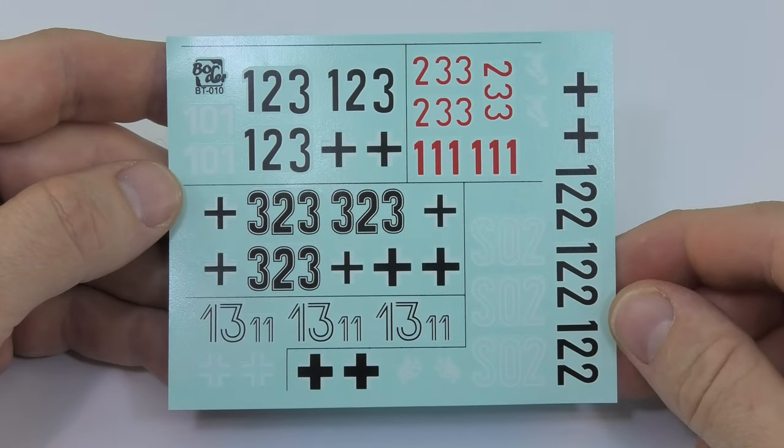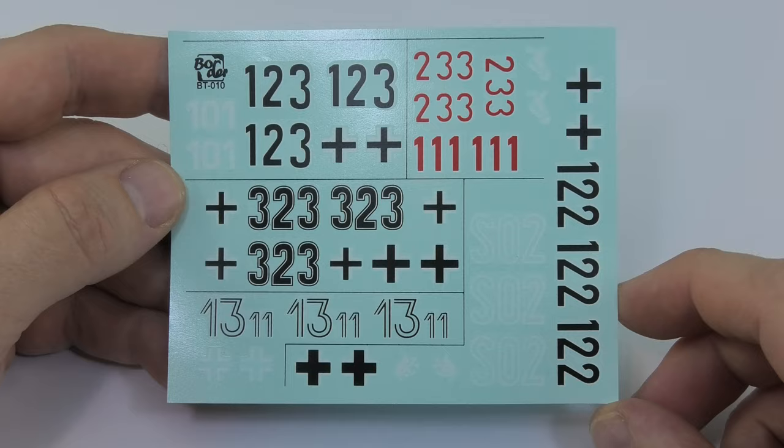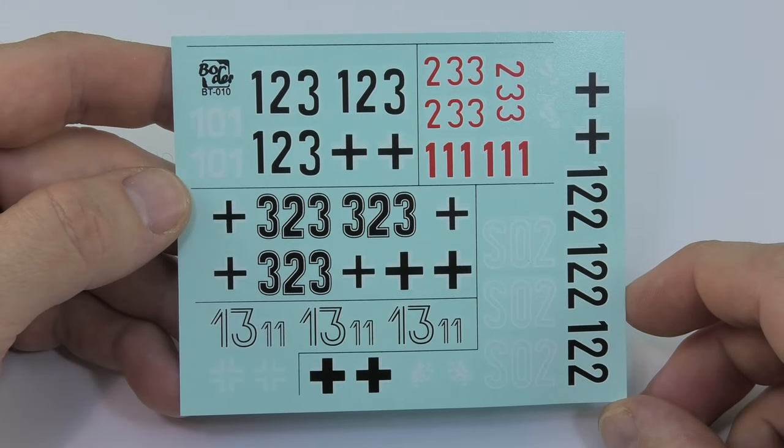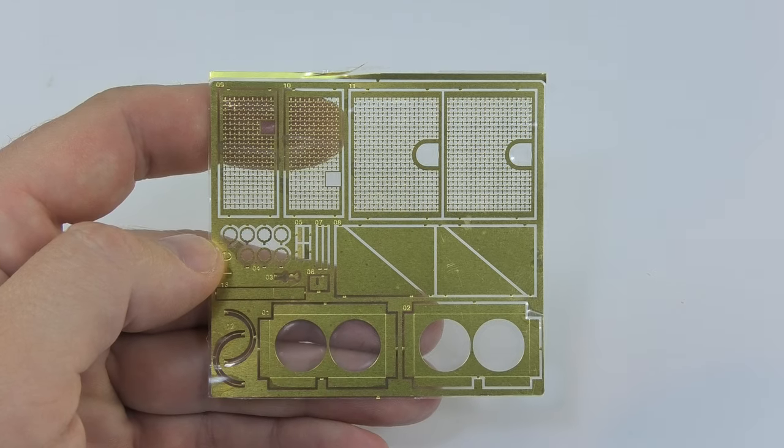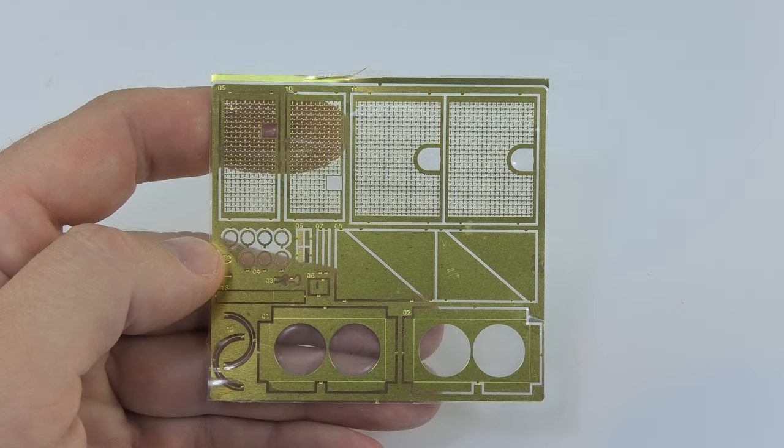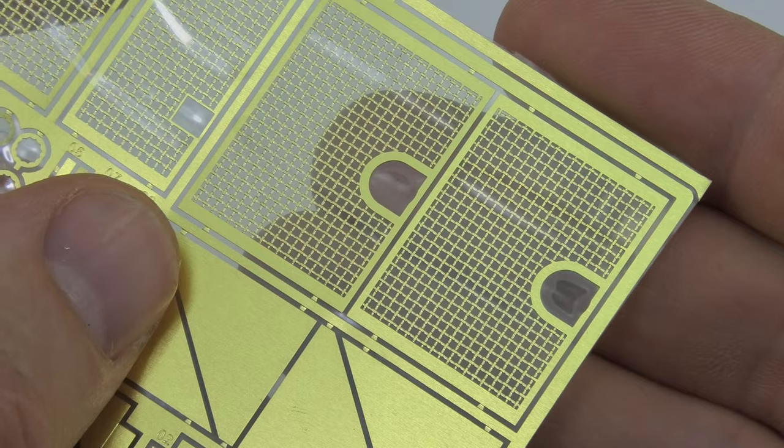The decals are in standard quality and I will be using them for the vehicle from Das Reich, so I hope they will lay down nicely. Some parts are on the photo-etch plate. The first thing is grill nets.